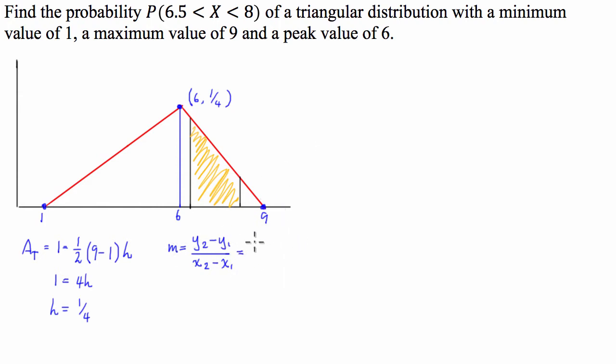So y2 is 0, subtract y1 which is 1 quarter, divided by x2, which is 9 take 6. So our gradient is going to be negative 1 quarter over 3, which is the same as saying negative 1 on 12.